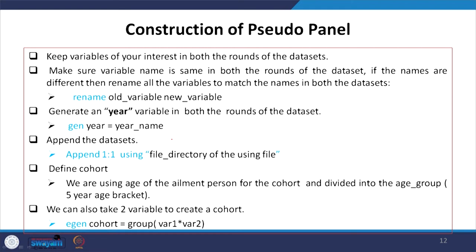If the names are different, rename all variables to match across both datasets — that is essential. We can rename using the command: rename old_variable new_variable. We also need to generate a year variable in both rounds of the dataset, such as year 1 or year 2, or the specific year name. Then we need to append the two datasets one-to-one using the directory file — for example, 71st to 75th or 75th to 71st — with the command using the directory name. These steps have already been covered in earlier lectures.